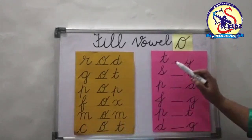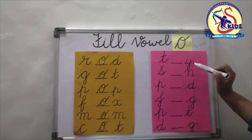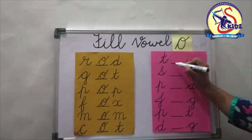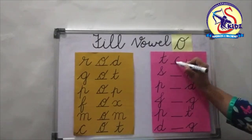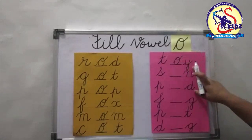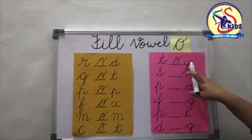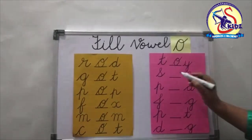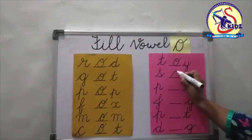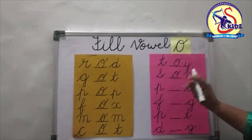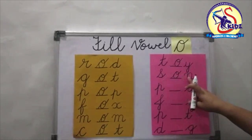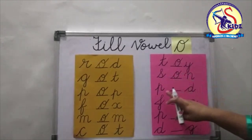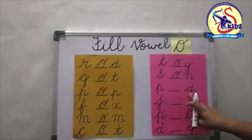Now see the next: T blank Y. Again we will put O in the blank. T-O-Y, toy. Now S blank N. Again we will put O in the blank and we will get the word S-O-N, son.